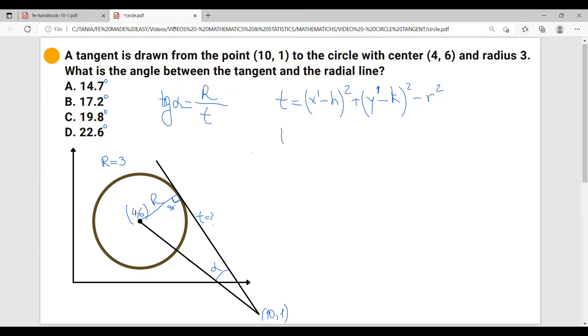So let's go ahead and calculate the tangent. And also x' is 10 and y' is 1. So we have (10 - 4)² plus (1 - 6)² minus 3². Let me use my calculator here to quickly solve this problem. So I have 10 minus 4 is 6 squared, that's 36, plus 25 minus 9.